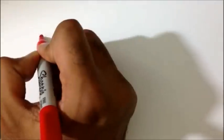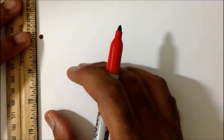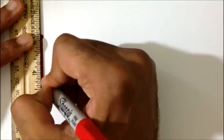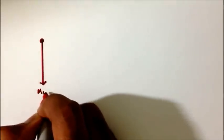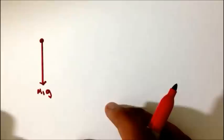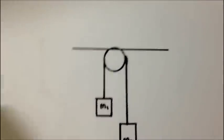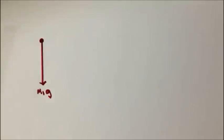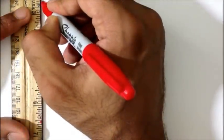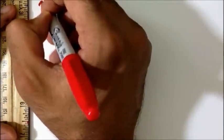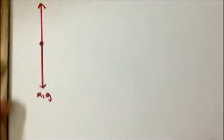Let's proceed with the free body diagrams. I will begin with mass M1, represented here as a dot. I will draw a force vector representing the gravitational force, or the weight of that mass, given by M1 times g. We also have the tension force acting upward. We will label that tension T.